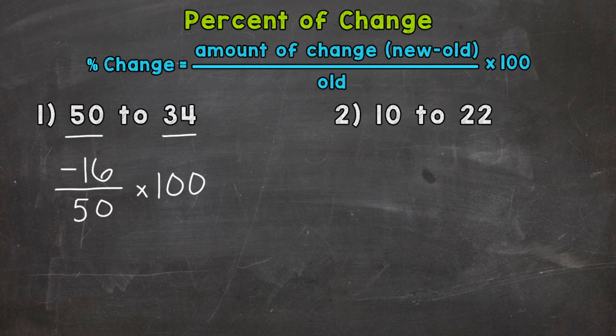All right, so negative 16 divided by 50 is going to give us a negative 0.32. And then multiply that by 100 again to convert that decimal to a percent. So we can multiply that decimal by 100 by moving the decimal twice to the right. So one, two.